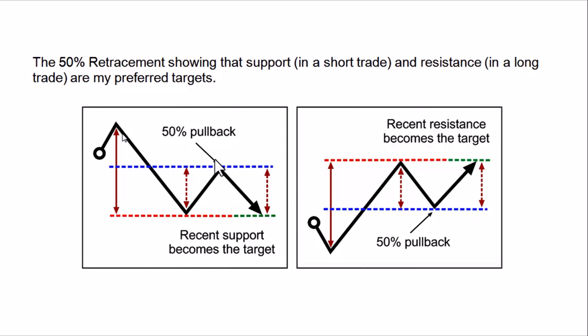If a resistance area forms — maybe an engulfing candle or other candle pattern — you can check my channel playlist for candle patterns to understand different types and see them on support and resistance. When that pullback covers 50% of the original move, your target should be the previous support zone. The market will break it out and continue because it's a 50% retracement using Fibonacci as a continuation pattern.